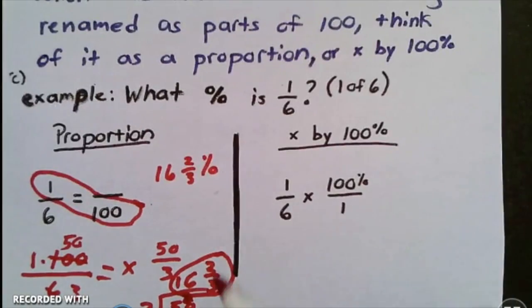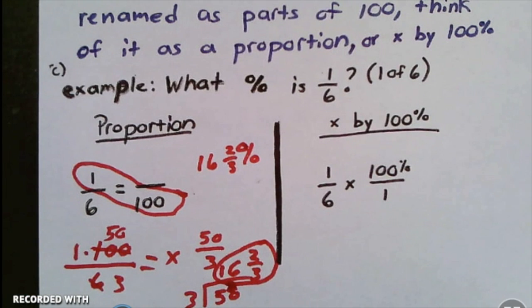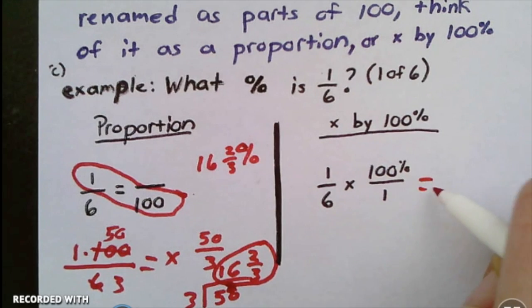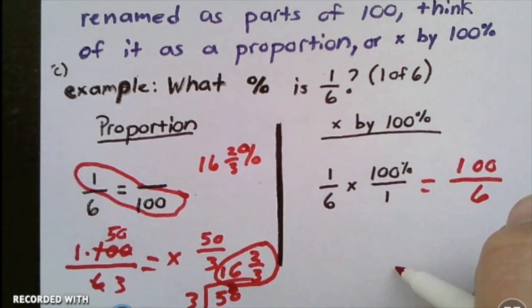Here is another way to do it. I can multiply by a hundred percent. That means I'm going to take 1/6 and multiply it by 100 percent over 1, which is going to give me 100 percent over 6.